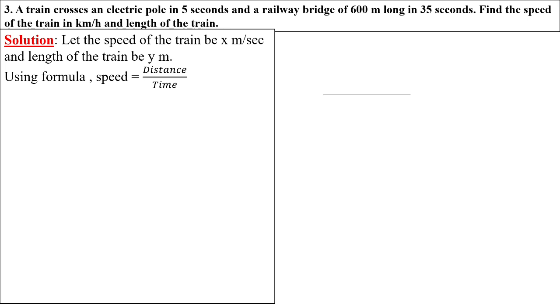From the first condition, a train crosses an electric pole in five seconds. The speed we assume is x and distance is y, and the time to cover the electric pole is five seconds. So x equals y upon 5. We convert this fraction into an equation.